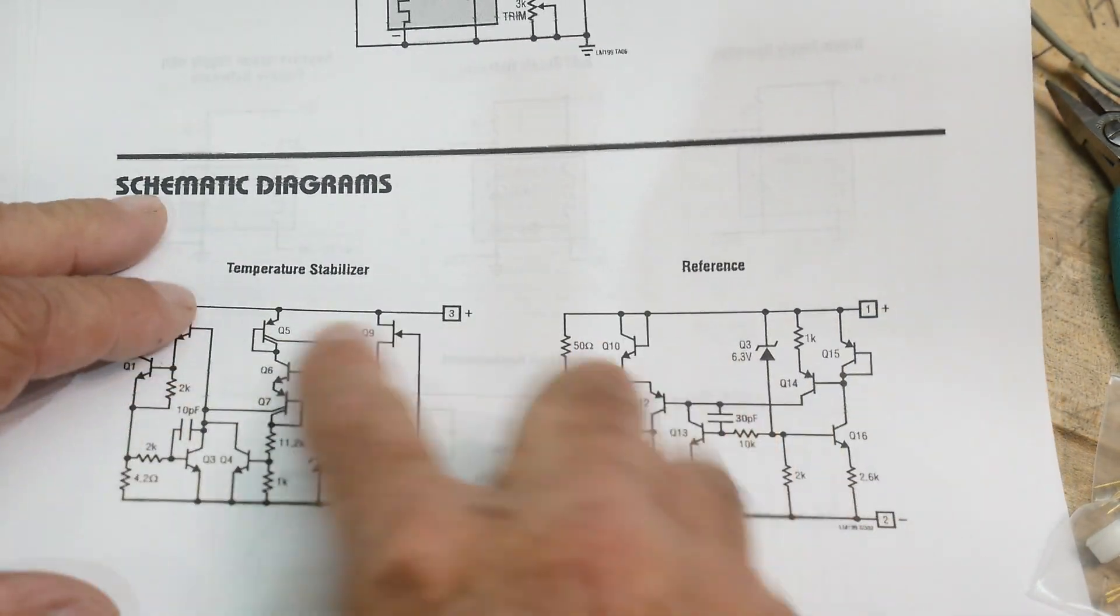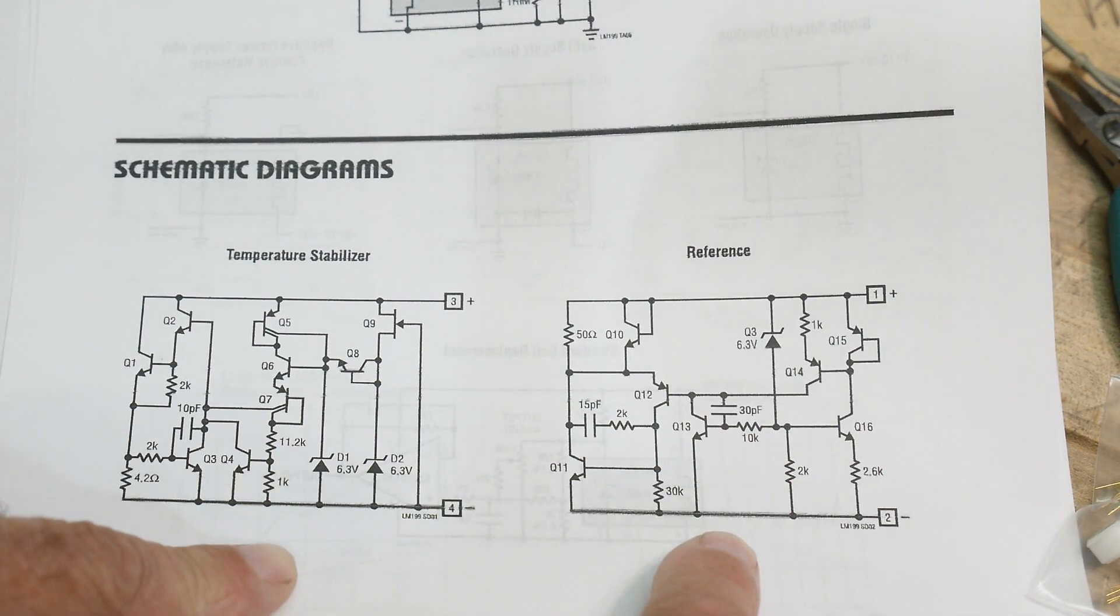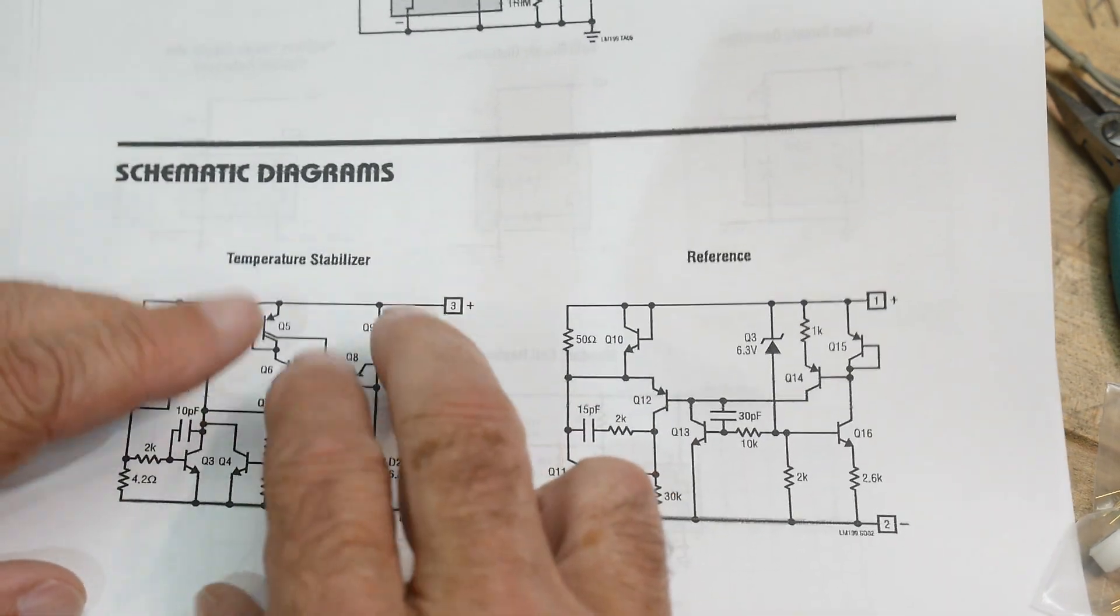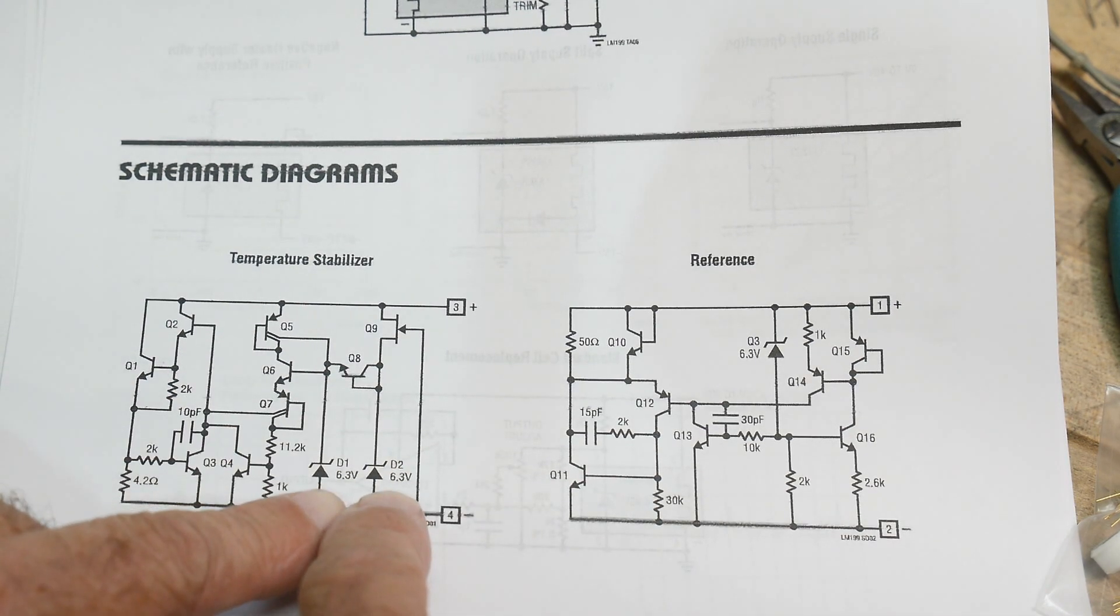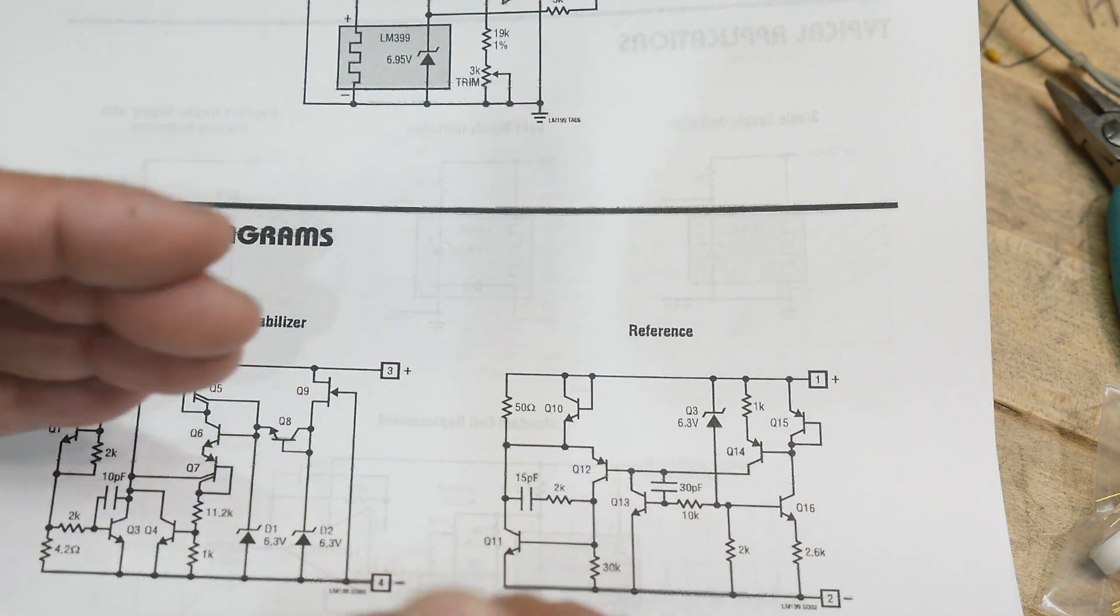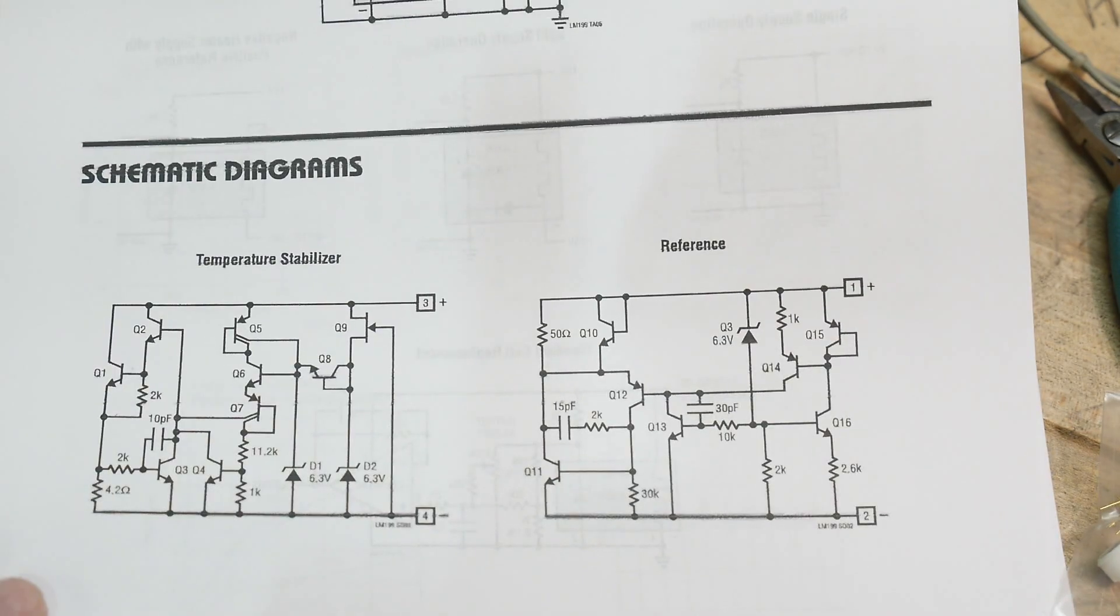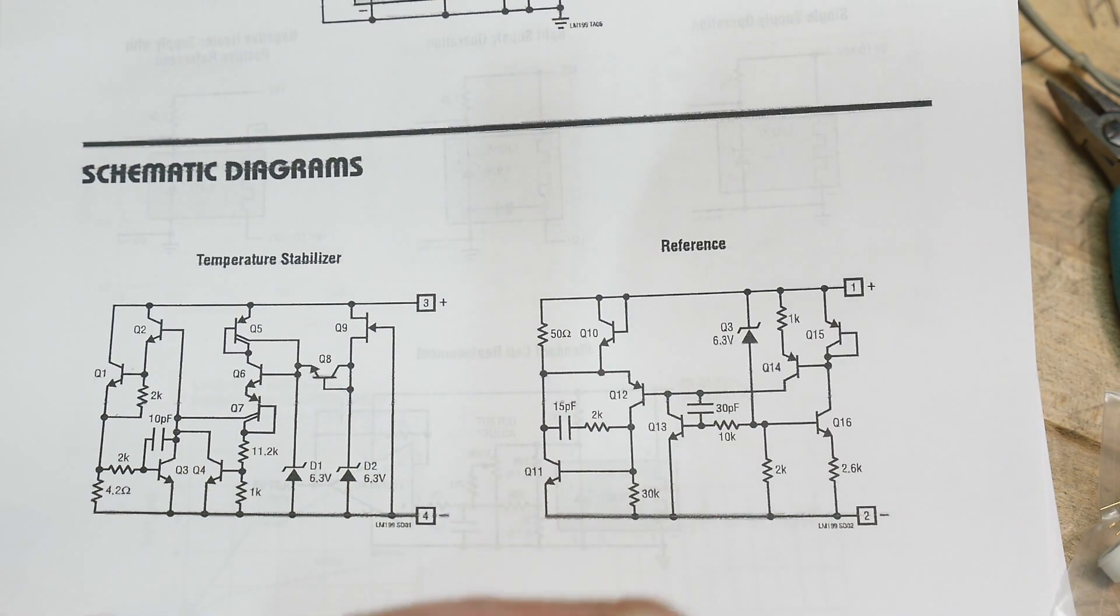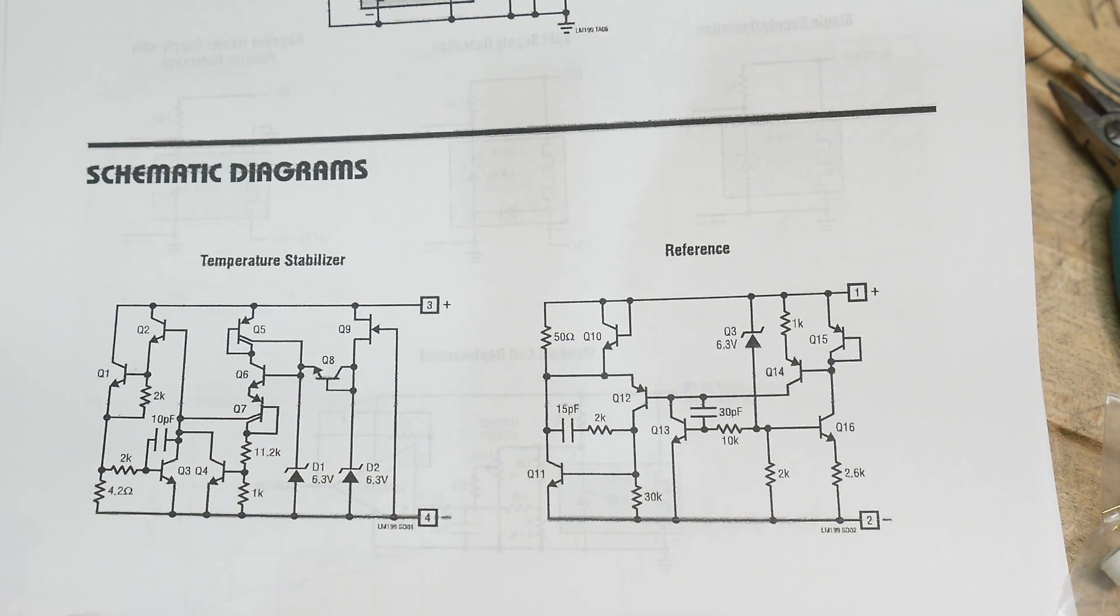Here we go. It says here's the temperature stabilizer and here's the reference. It's complicated. This is just the heater and temperature control so it stays at a fixed temperature. It has its own reference, its own zener diode so it knows to stay within its bounds. Then the reference has a whole bunch of stuff around it to keep it happy. Very interestingly, these are on the same piece of silicon, just one piece of silicon. Very different than I thought it was going to be.